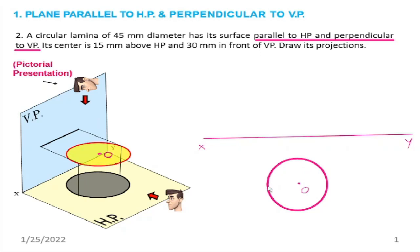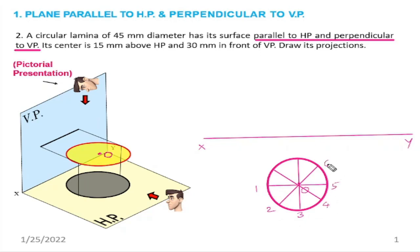For circles, we always draw a number of divisions. For a circular lamina, we divide the circle and number the divisions: 1, 2, 3, 4, 5, 6, 7, 8. This is already the top view. This is the front view.